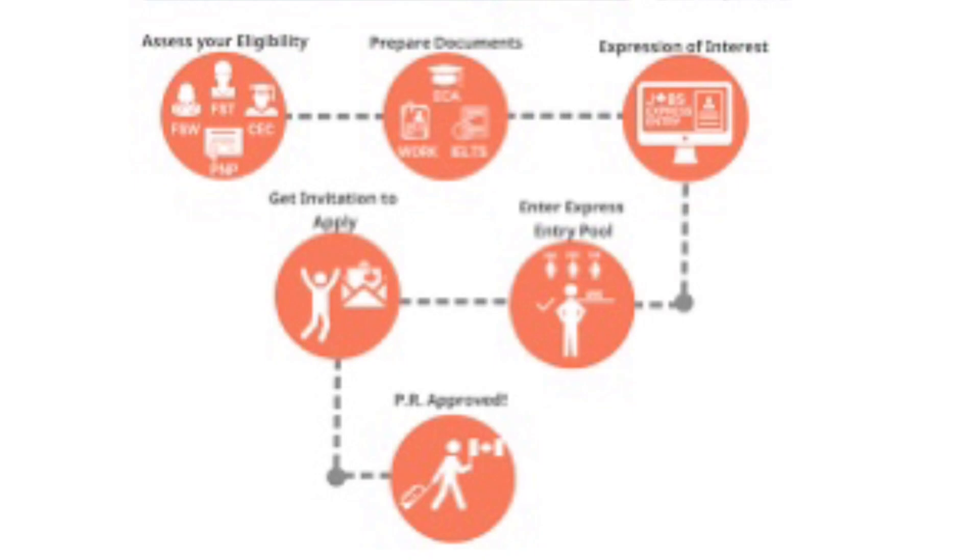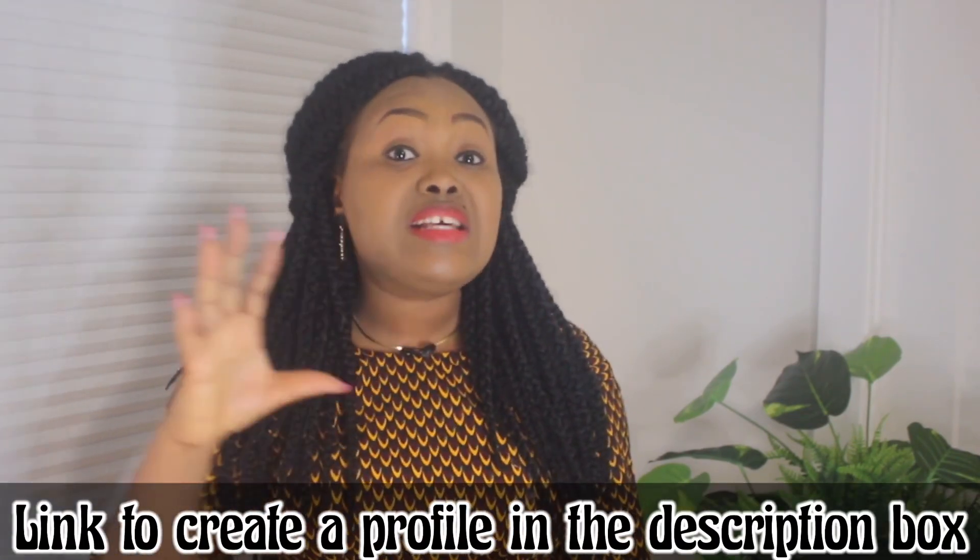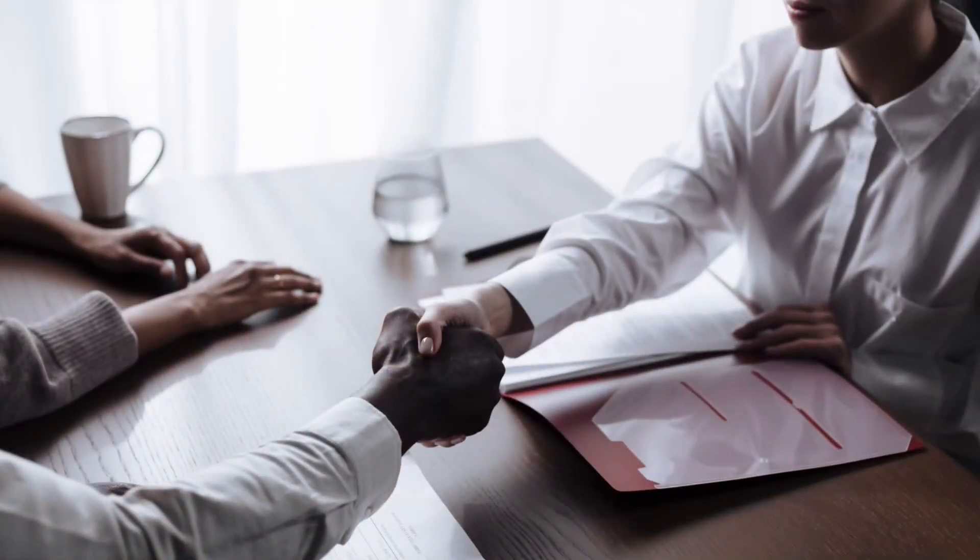To start, you must first create an Express Entry profile by answering questions under six broad categories: your personal details, contact details, study and language information, application details, representative information — which is simply asking if you're going to be using a registered immigration consultant to submit your application — and questions relating to your work history.